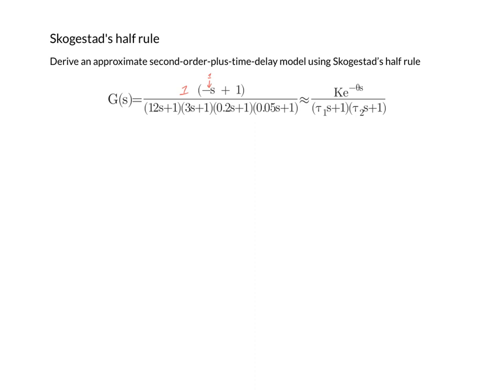Once we have written the transfer function in gain time constant form, it becomes very easy to handle the gain part, so we can immediately write down the gain of this transfer function is 1.